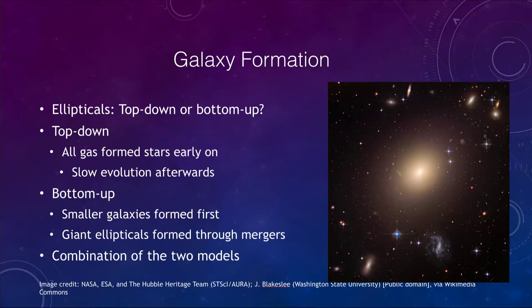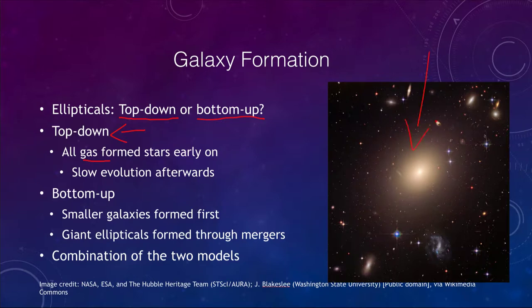First, let's look at how galaxies formed. There are two different ways we can think about this: top-down or bottom-up. A top-down method says that all gas formed the stars very early on in the history of the elliptical galaxy, and then it was just slow evolution afterwards with minor changes. Bottom-up formation means that smaller galaxies formed first, and giant ellipticals formed through mergers.